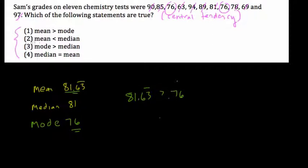But if you check the other ones, is the mean less than the median? That's not true. 81.63 is not less than 81. That can't be correct. Is the mode of 76 greater than the median? No, 76 is not greater than 81. Is the median equal to the mean? No, those are different numbers. They're very close. So, the answer, of course, must be 1.